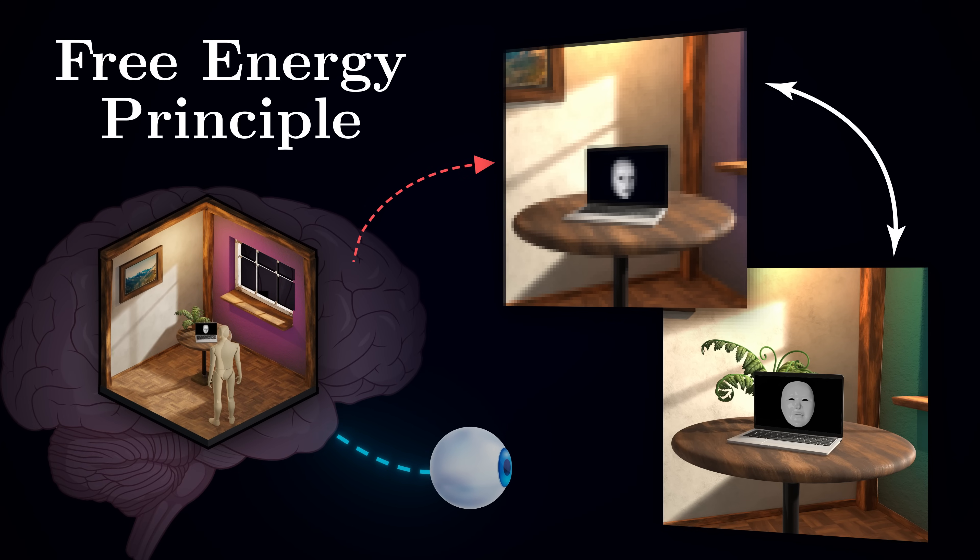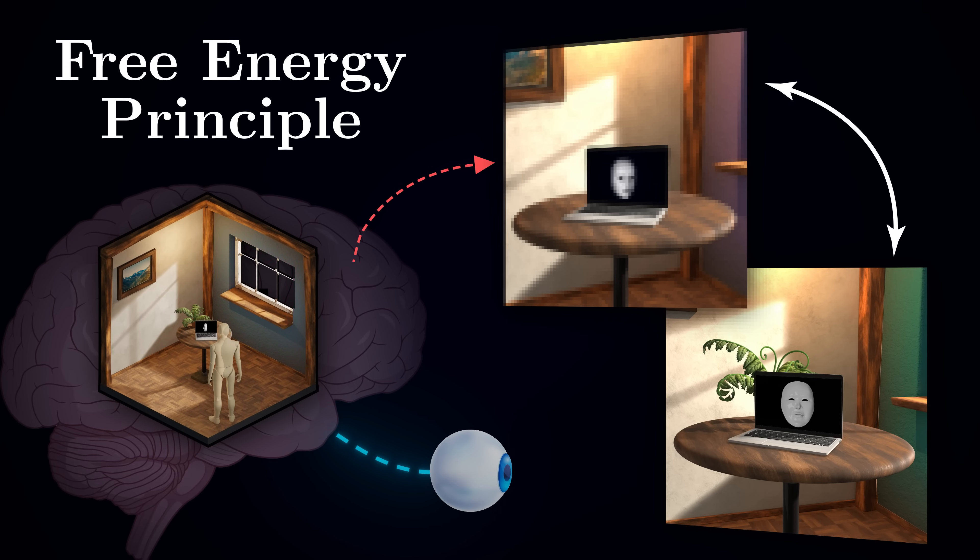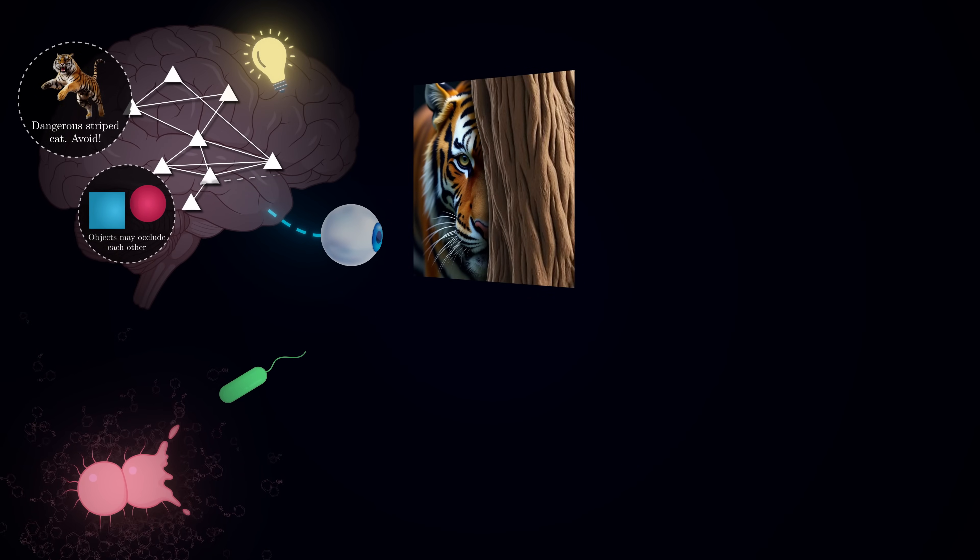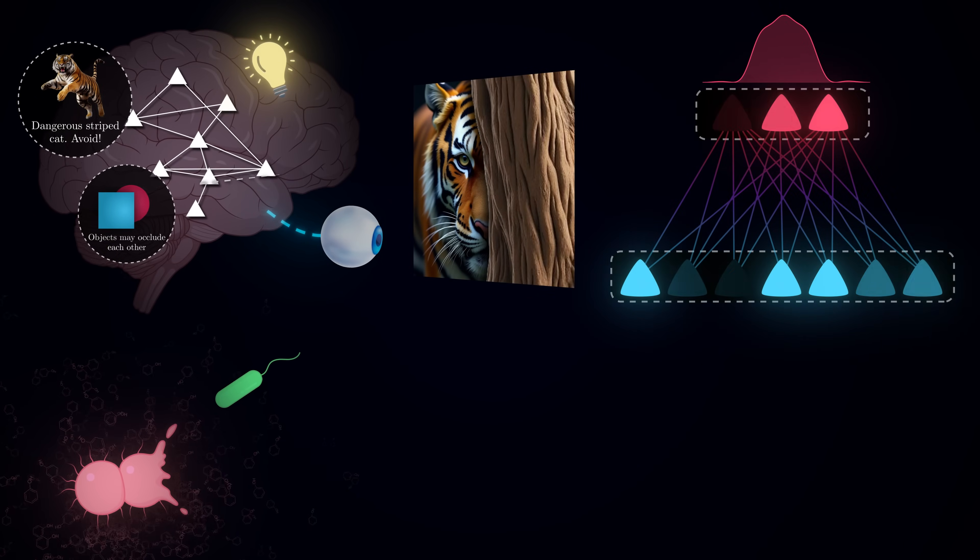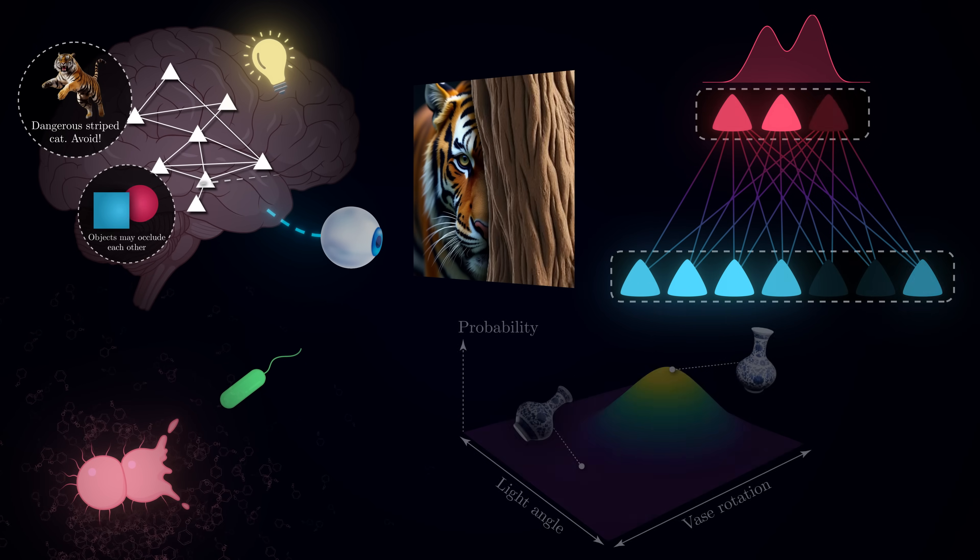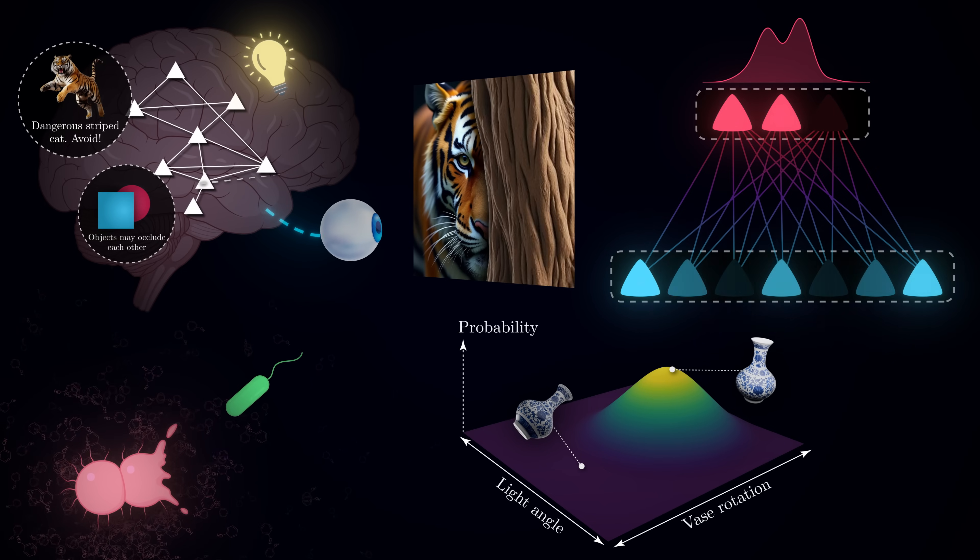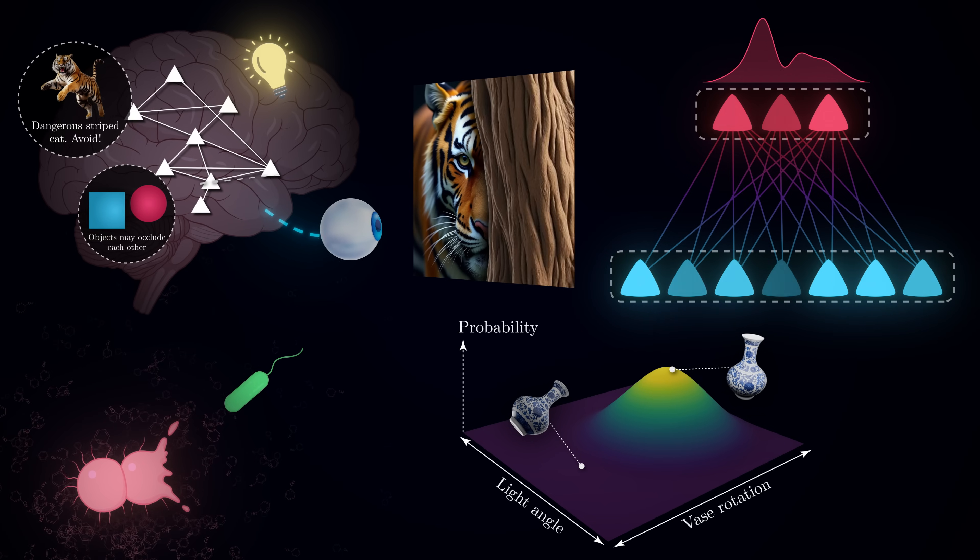Today we are going to explore this fascinating theory. We will discover why evolution turned our brains into prediction machines, how this helps us survive in an uncertain world, and why sometimes, like in this mask illusion, our brain's predictions can overwrite what's actually in front of us.